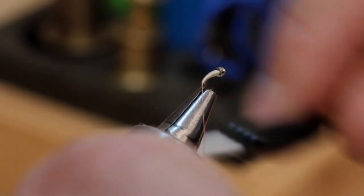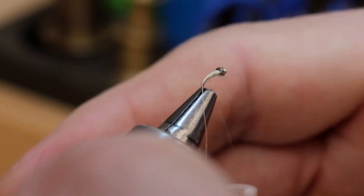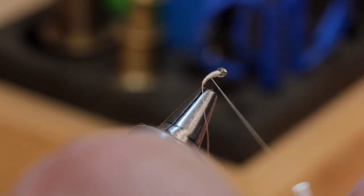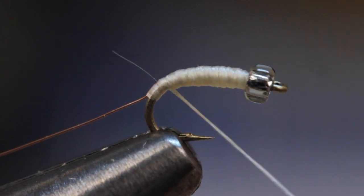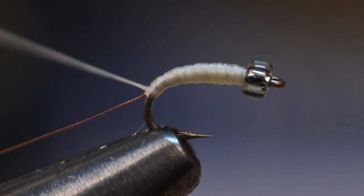Then take 4 or 5 wraps down the hook shank before giving the bobbin another counterclockwise spin. You'll find the flattened thread allows you to make a nice thin, even top coat over the tapered body.